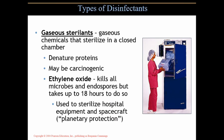Gaseous sterilants are in gaseous form rather than liquid. They can get into every nook and cranny and are used for equipment that can't be submerged or can't have any solution on it. They're very effective, denature proteins, and may be carcinogenic — some may cause cancer. Ethylene oxide is a common gaseous sterilant that kills all microbes and endospores, leading to complete sterilization. Many disinfectants cannot kill endospores, but ethylene oxide can. It's used to sterilize hospital equipment and spacecraft — what we call planetary protection — ensuring our microbes don't leave Earth.